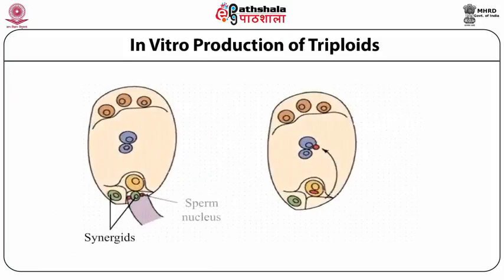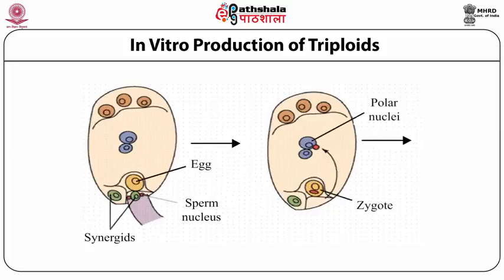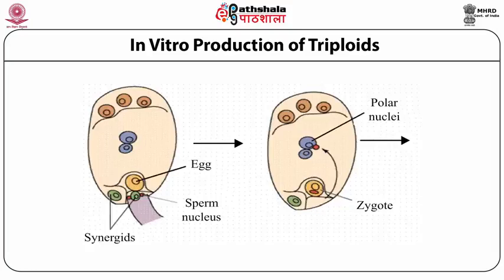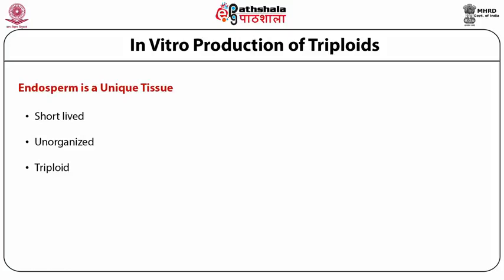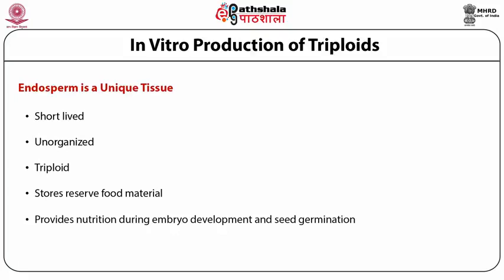Here you see in the picture the embryo sac with eight nuclei and one sperm fusing with the egg cell to form the zygote. And the second one fusing with the two nuclei of the central cell forming the primary endosperm cell. The characteristic feature of endosperm is that it is short-lived, always unorganized, triploid, and it stores reserved food material and provides nutrition during embryo development and seed germination.